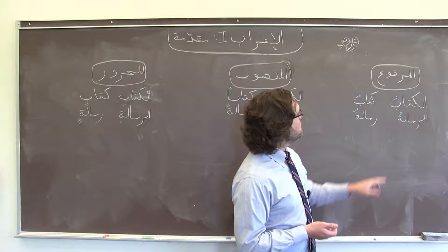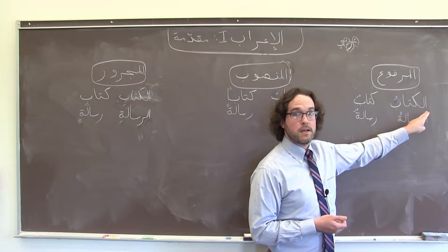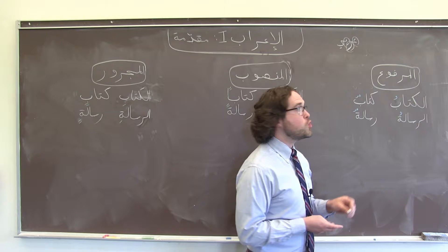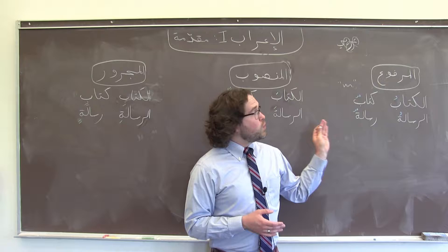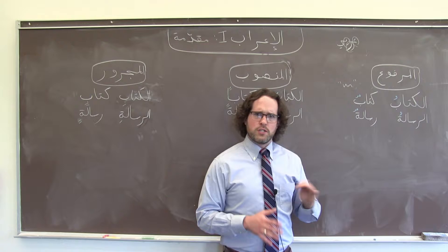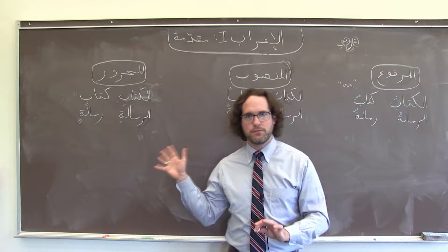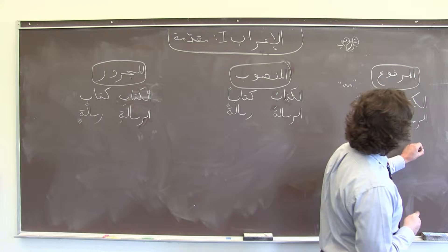المرفوع is our default case. When we have a noun with مرفوع on it, it is typically going to take a ضمّة — a single ضمّة at the end if it's a definite noun, or ضمّة تنوين — two ضمّات that give it that 'un' sound. Where we see مرفوع most commonly is in a default position: if there are no other circumstances in the sentence that make our noun have to be a different case ending, it's probably going to be مرفوع.